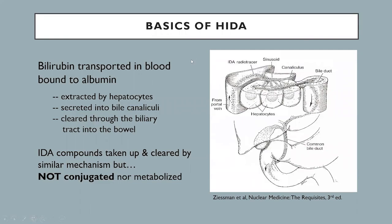Some basics of hepatobiliary scan. Bilirubin is transported in the blood bound to albumin. Bilirubins are then extracted by hepatocytes, secreted into the bile canaliculi, and cleared through the biliary tract into the small bowel. Immunodiacetic acid compounds are taken up and cleared by similar mechanisms, but not conjugated nor metabolized.